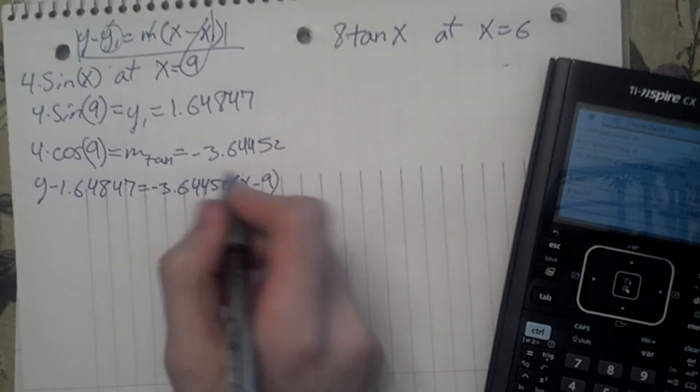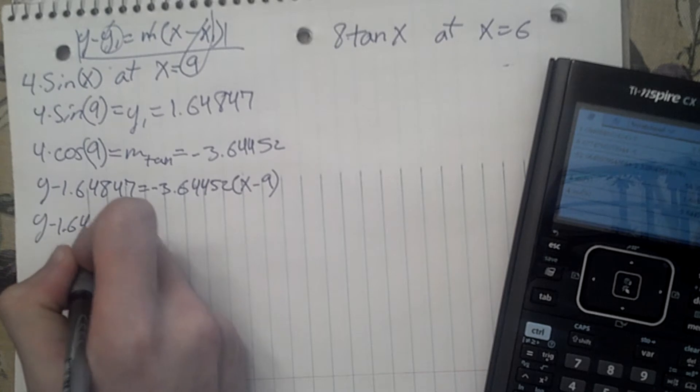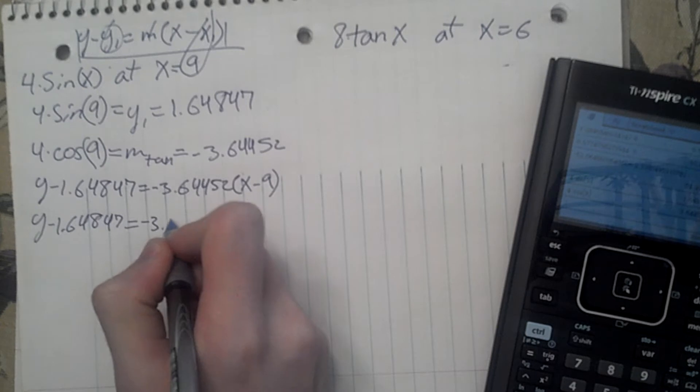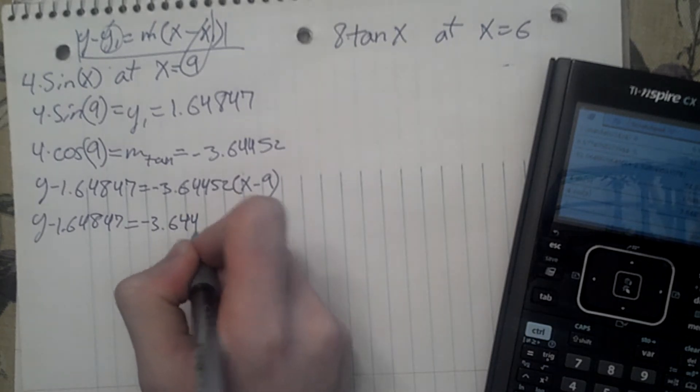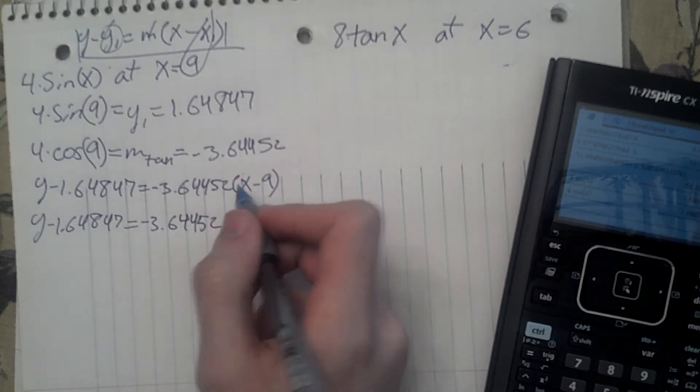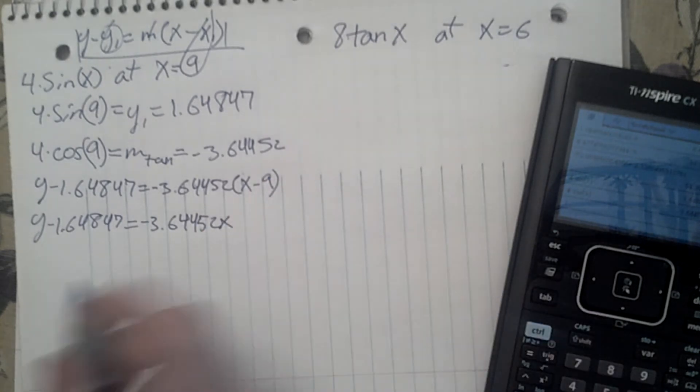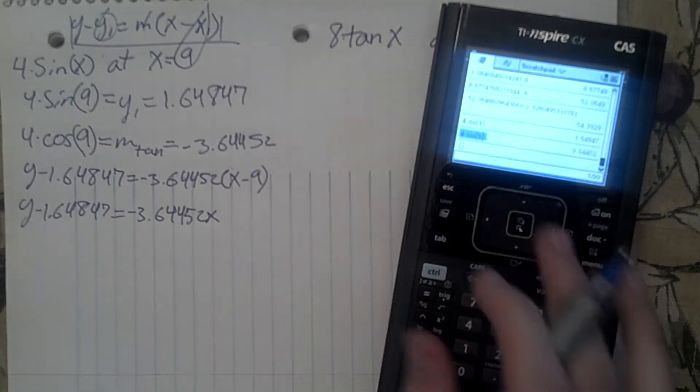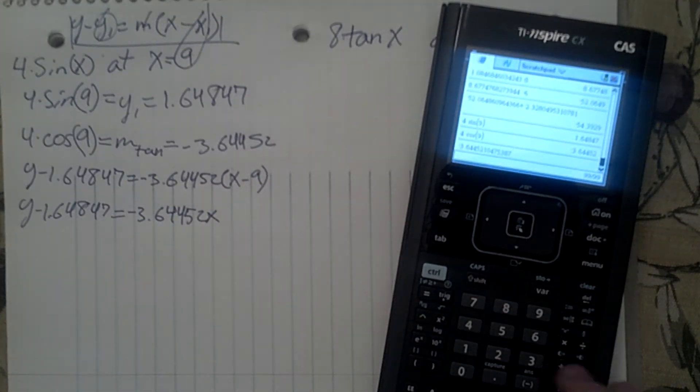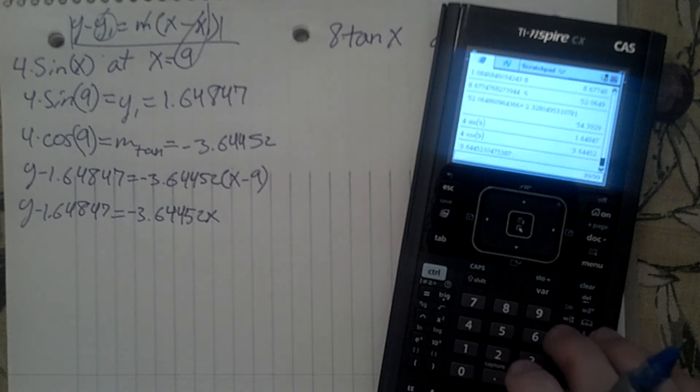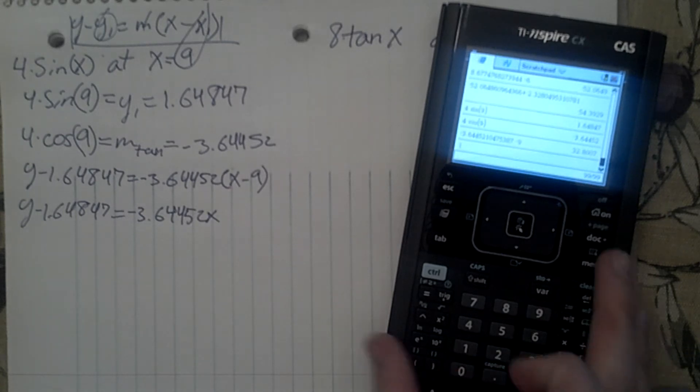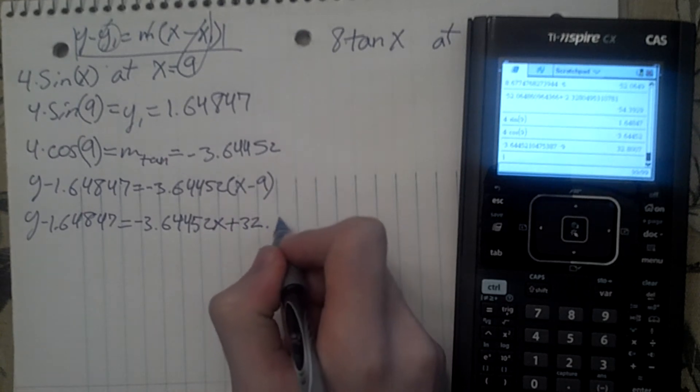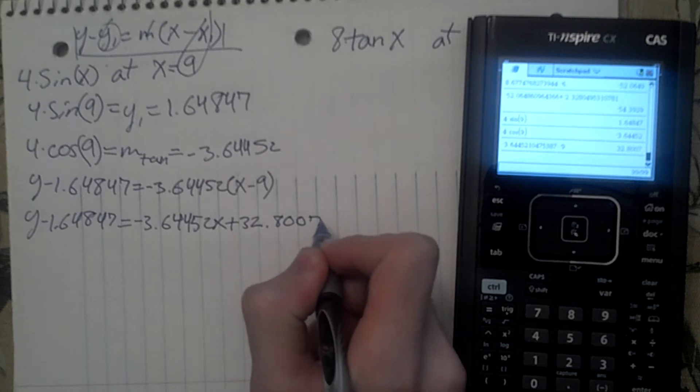Now let's multiply these two out. y minus 1.64847 equals negative 3.6452 times x. Now, we multiply both of these, it's going to give us a positive number. That multiplied by negative 9 is going to give us plus 32.807.